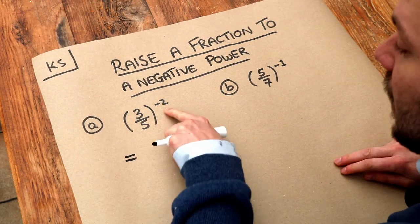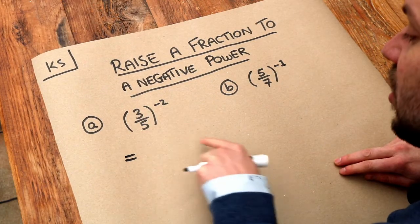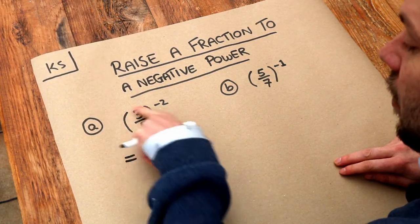And we saw in the previous video that if we had a negative index like this, we just did 1 over this whole thing.